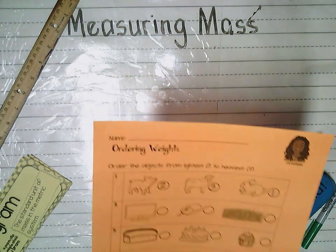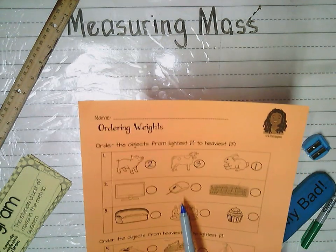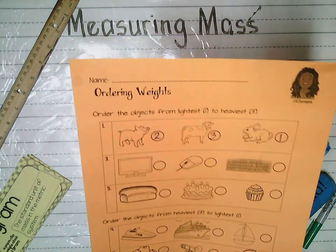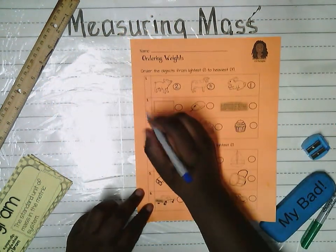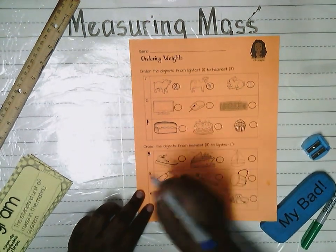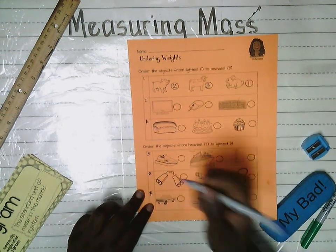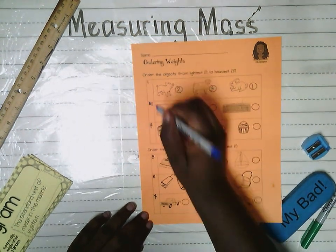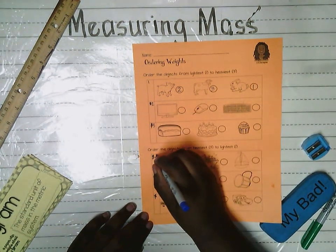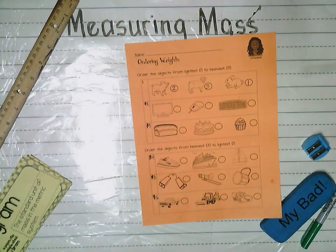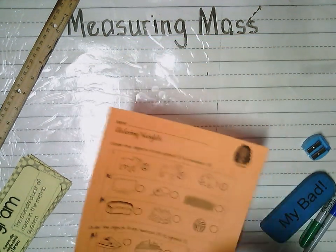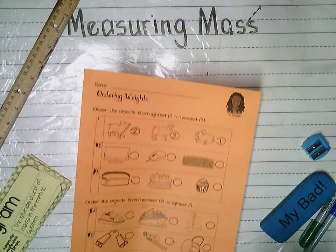In number two we have a computer monitor, a computer mouse, and a keyboard — write one, two, and three to order them from lightest to heaviest. You'll notice I have to fix my numbers — teachers make mistakes too! I just had to correct them. That's all part of learning; mistakes are expected, they're addressed, and then corrected. It's okay to make mistakes — we learn from them.